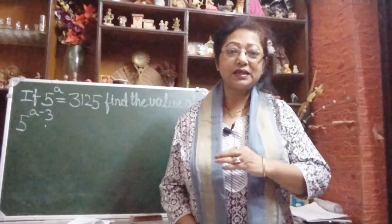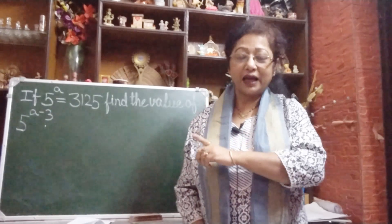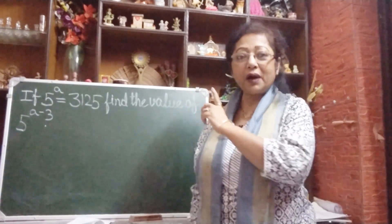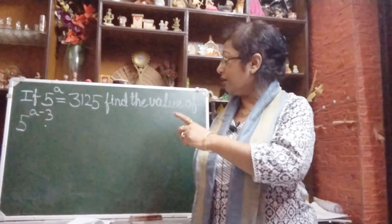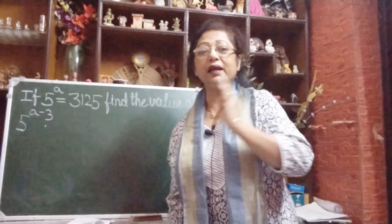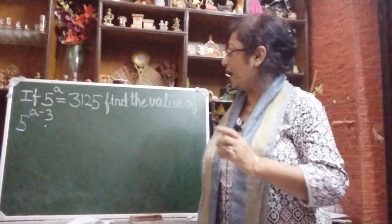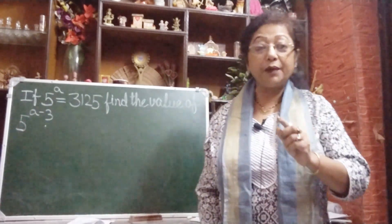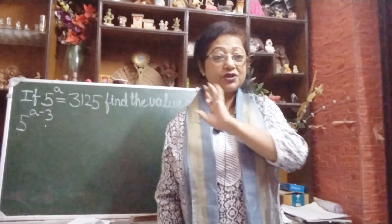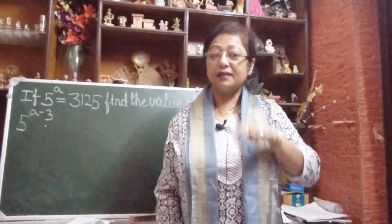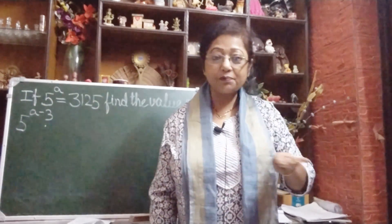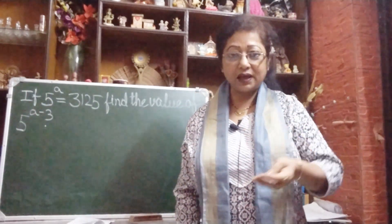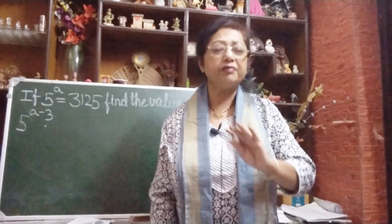All of you watch this exponent question. If 5 to the power a equals 3125, find the value of 5 to the power a minus 3. These types of sums we have not done before, so do this one and see how you will solve it.